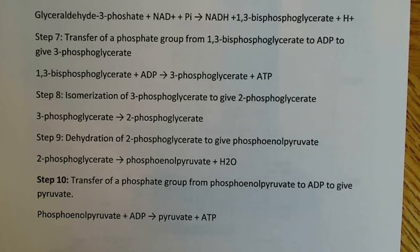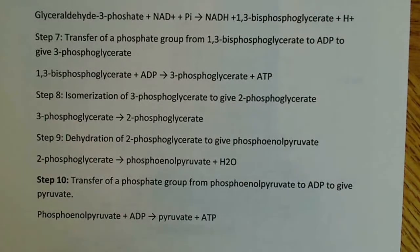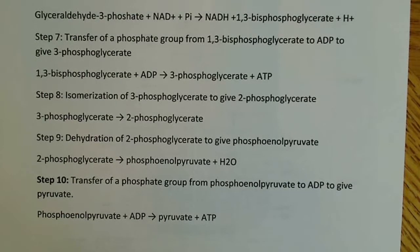Step eight is an isomerization of 3-phosphoglycerate to give 2-phosphoglycerate — not terribly important or interesting. Step nine is a dehydration reaction using the enzyme enolase of 2-phosphoglycerate to give phosphoenolpyruvate. Phosphoenolpyruvate is a high-energy compound.